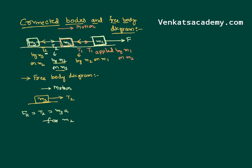Let us now draw the free body diagram for M2. I have to see the forces acting on M2, not applied by M2. This is the force acting on M2 — applied by M1 but acting on M2. I shall count this as T1. And I shall count this force acting on M2 applied by M3, which is the value T2. And it is moving like this. So I can write: F resultant for M2 is M2 into A. As it is moving from left to right, the left side force is treated as positive and the right side as negative.